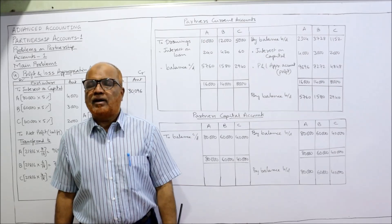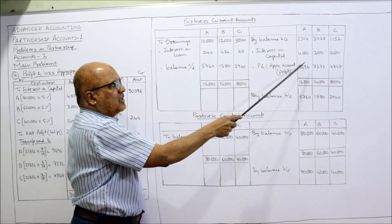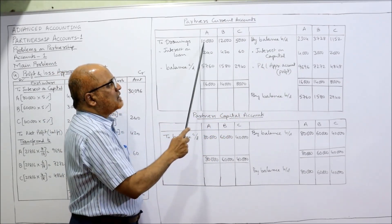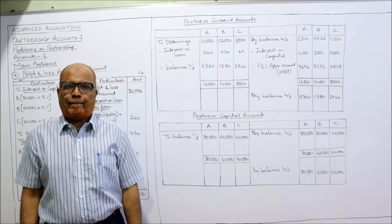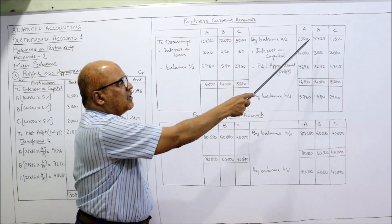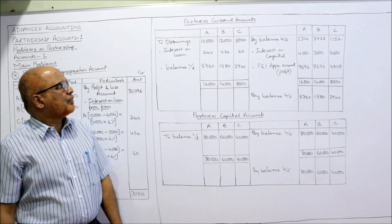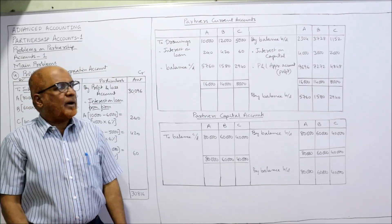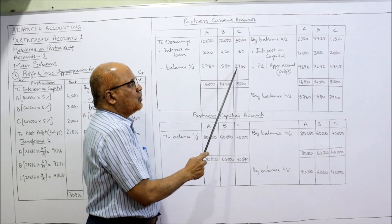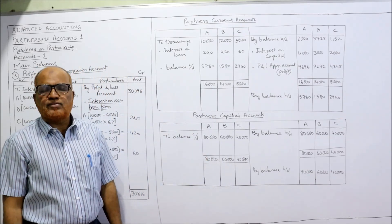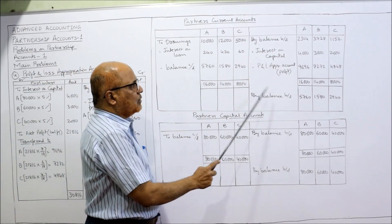Now we find the closing current account balance. For partner A: credit side total = 16,000. Minus 10,000 drawings, minus 240 interest = 5,760 closing balance. For partner B: credit side total = 14,000. Minus 12,000, minus 420 = 1,580 closing balance. For partner C: credit side total = 8,000. Minus 5,000, minus 60 = 2,940 closing balance. These are the carried down balances, and the same balances are brought down on the credit side.